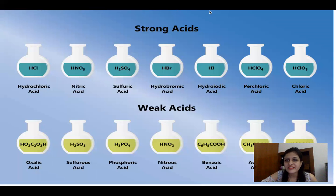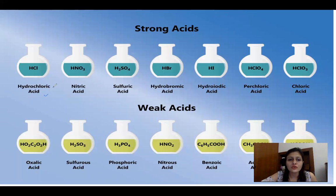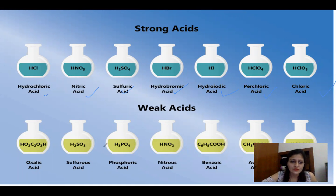For exam purposes, you should know the difference between strong acids and weak acids with examples. Strong acids include hydrochloric acid, nitric acid, sulfuric acid, hydrobromic acid, chloric acid, and fluoric acid. Weak acids include oxalic, sulfurous, phosphoric, nitrous, benzoic, and acetic acids.